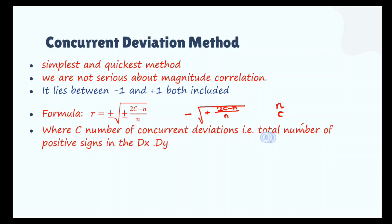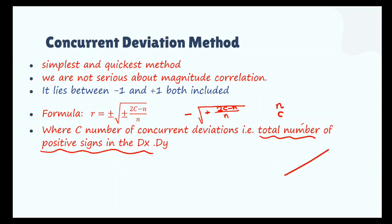C is the number of concurrent deviations, and that is basically the total number of positive signs in the product of dx and dy. You will understand this once I explain the example. For now, remember: C is the number of concurrent deviations, and N is the total number of pairs of deviations you are comparing. Out of those N, wherever you have a concurrent — the same deviation direction — that count is C.